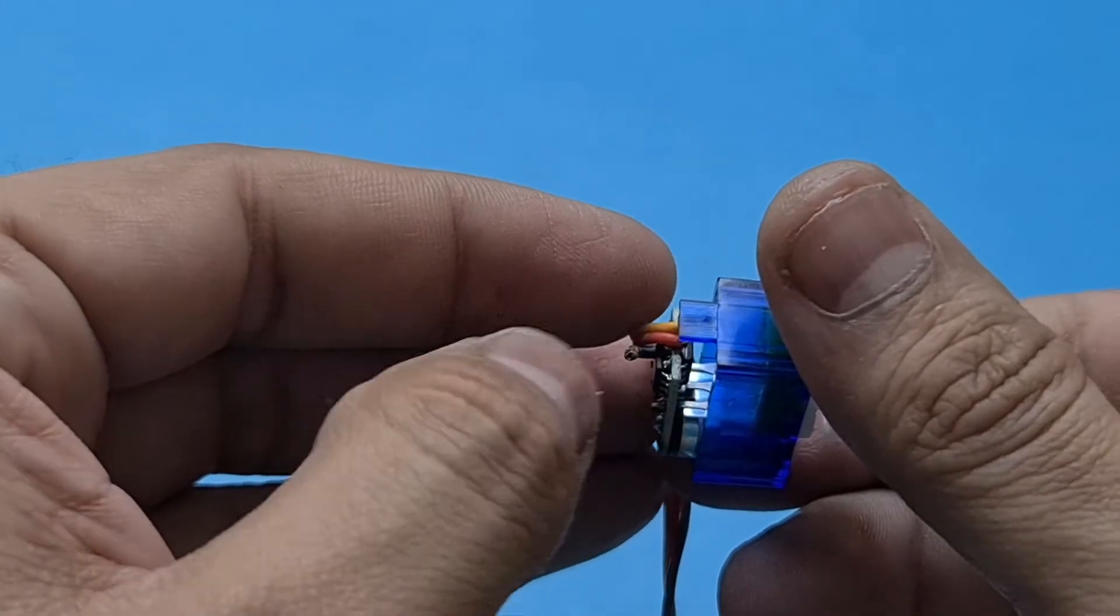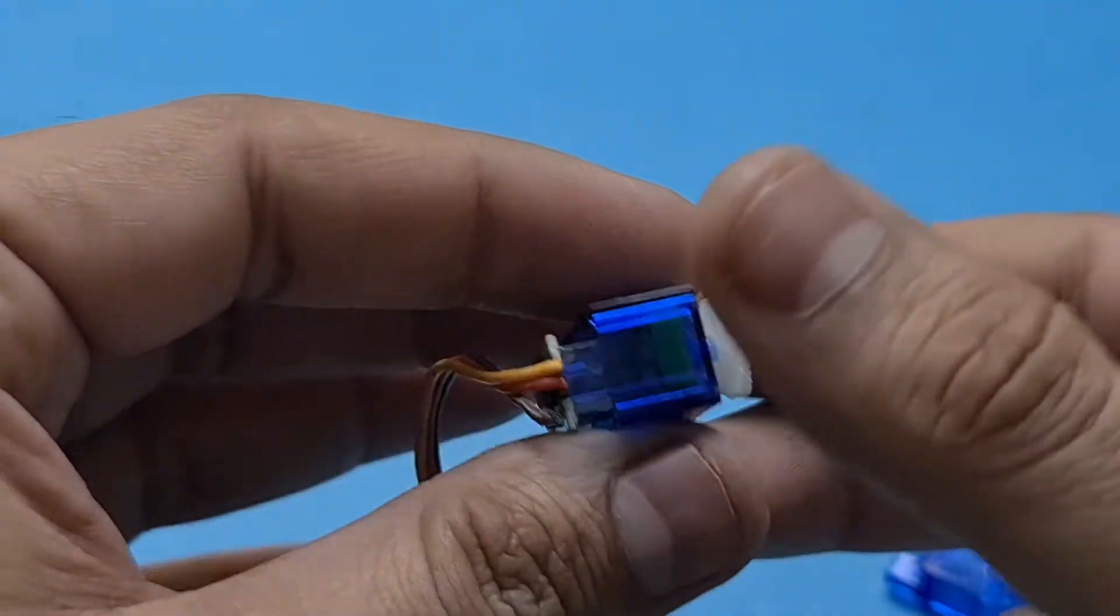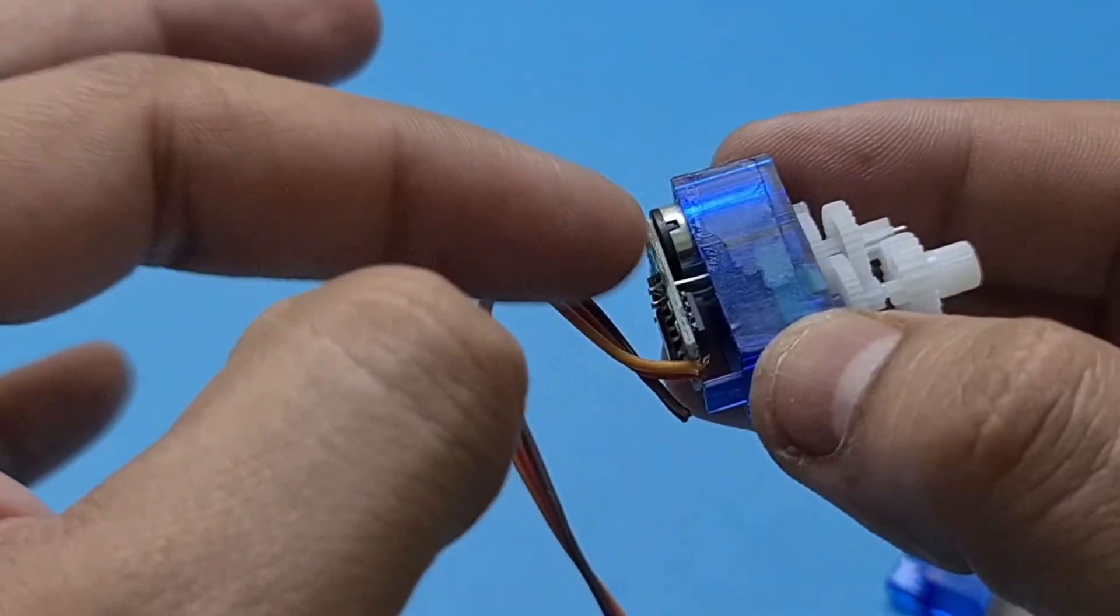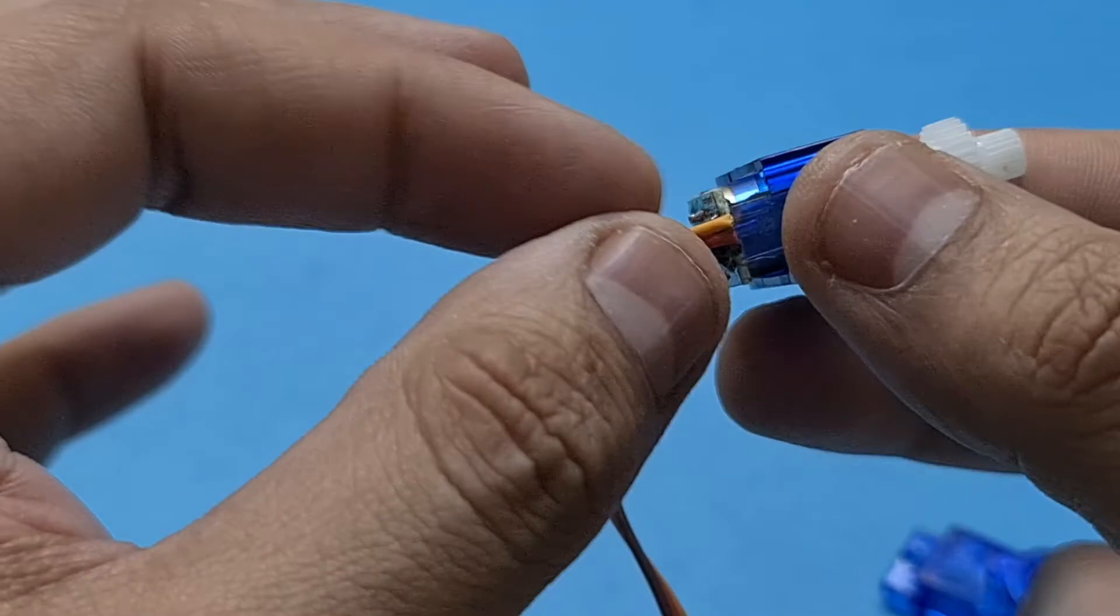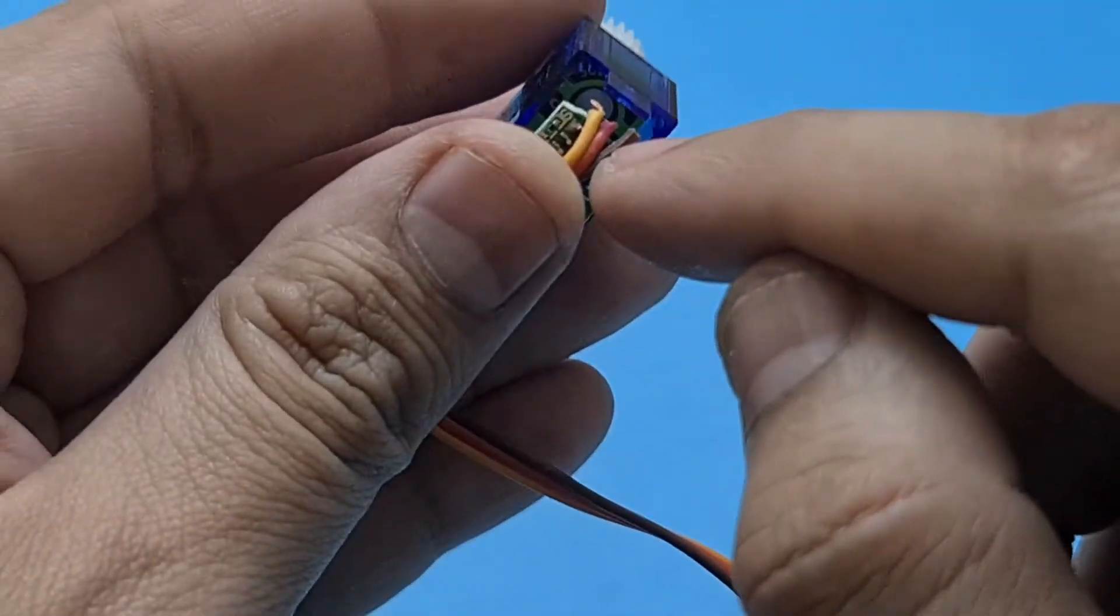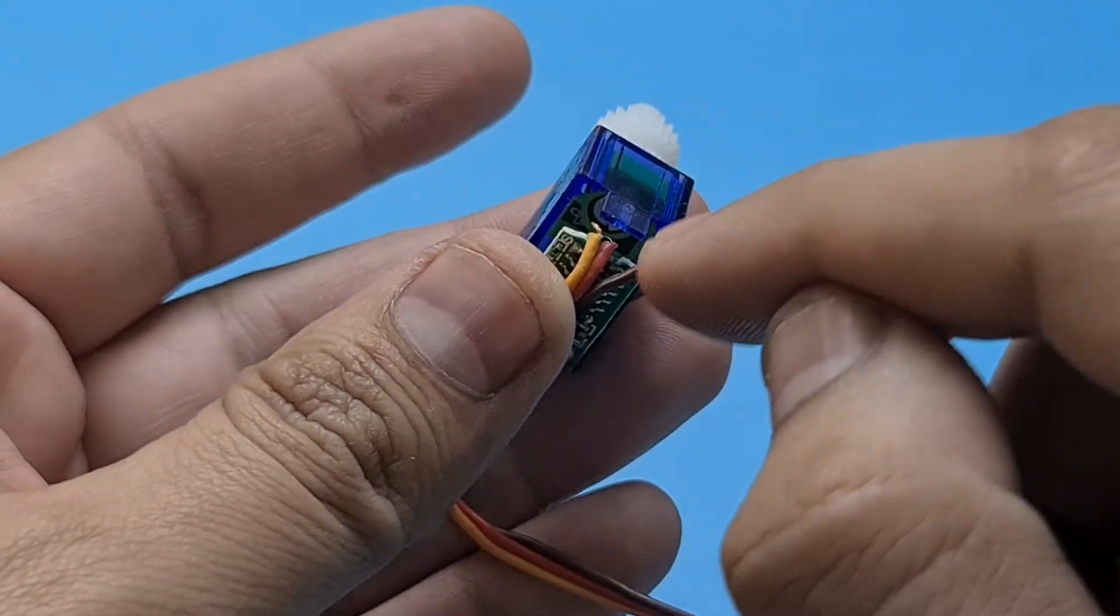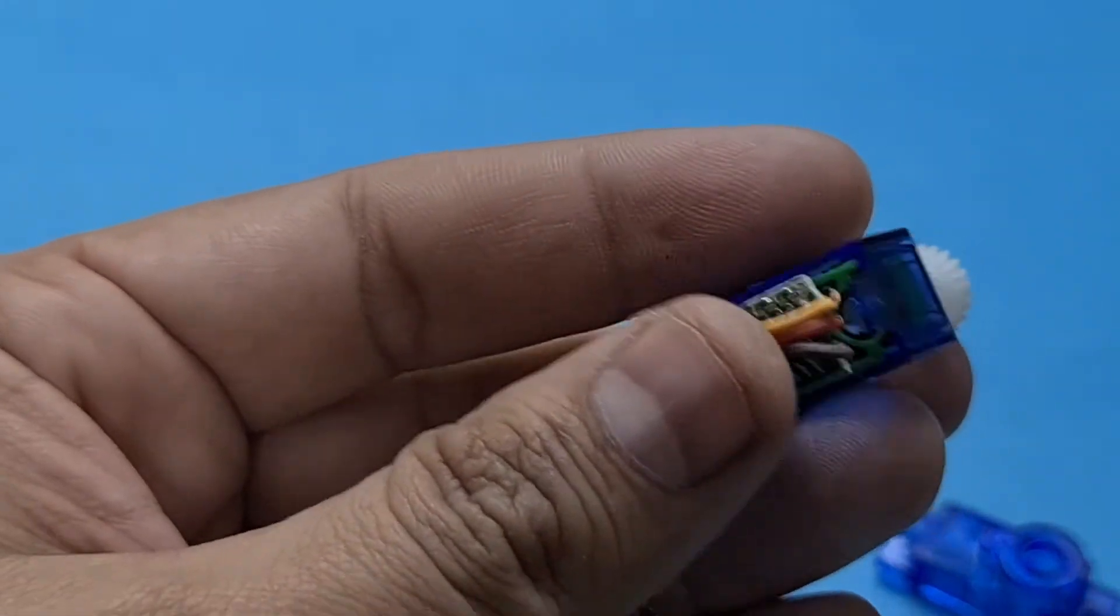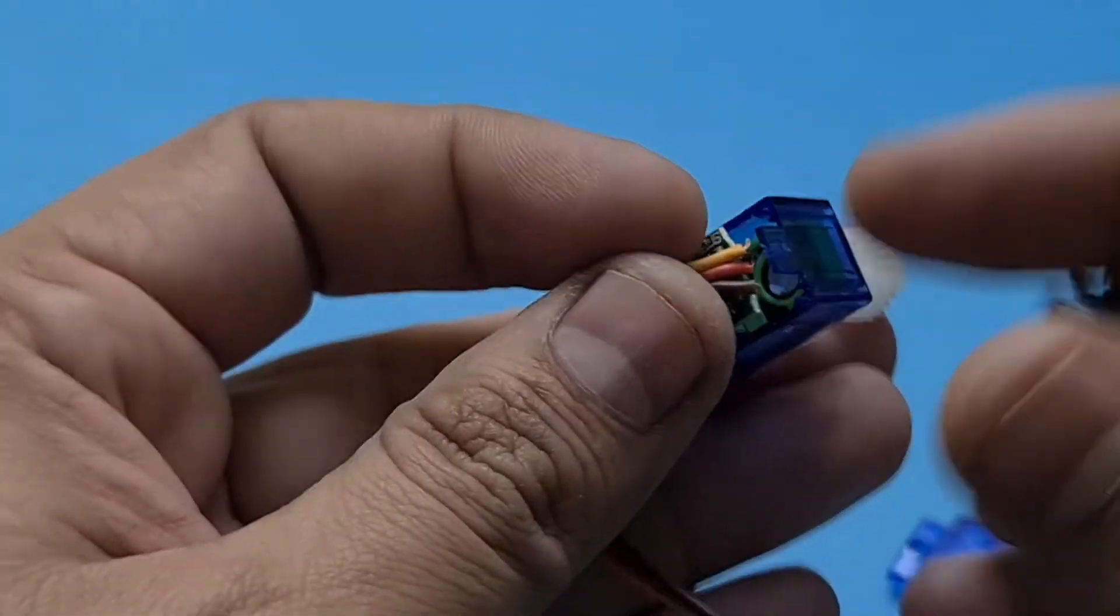You'll be surprised to know that this wire detachment issue is actually very common with these types of micro servo motors. If your micro servo isn't working, there's a high chance it's also suffering from this wire detachment issue. Luckily, it's very easy to attach these wires to the board again.